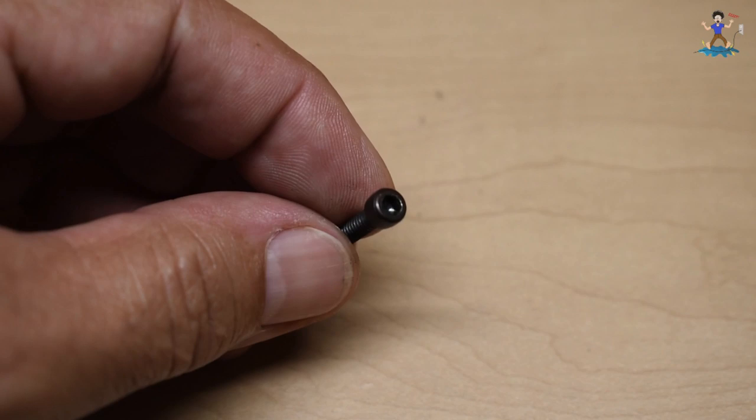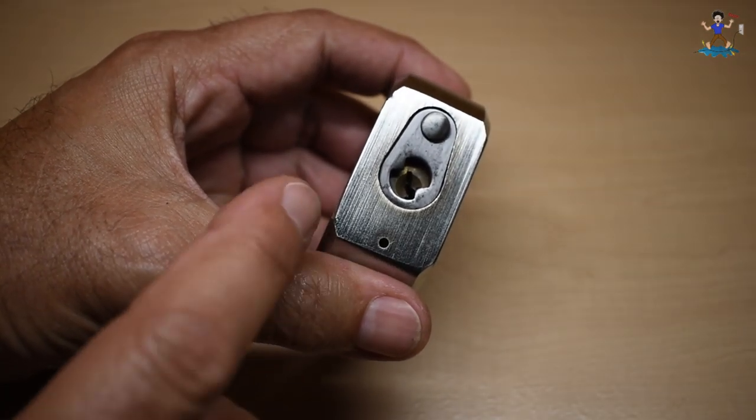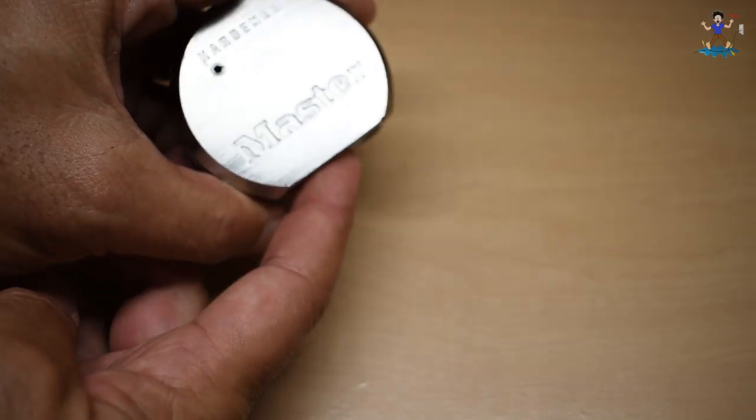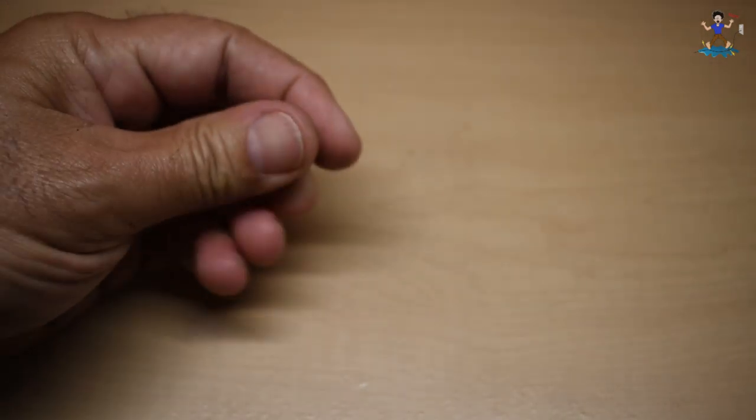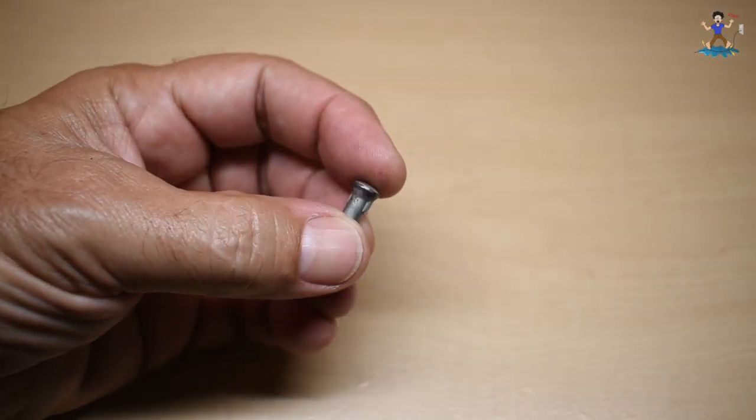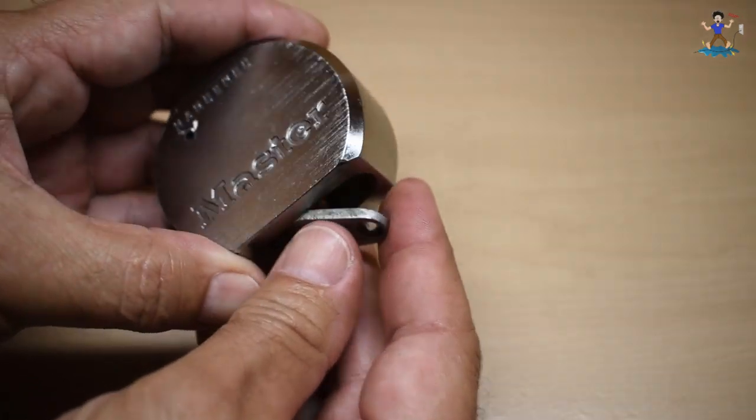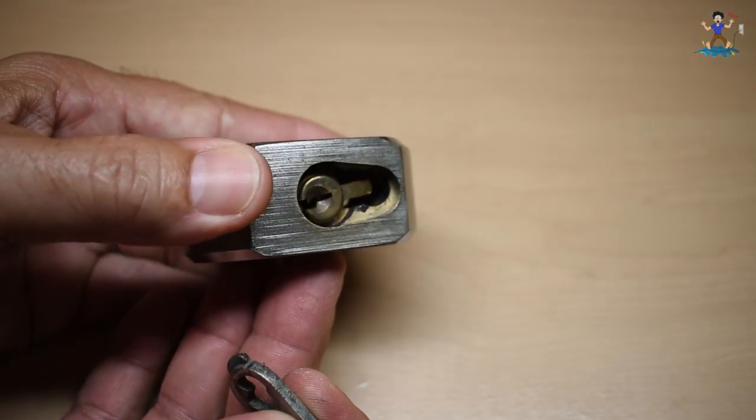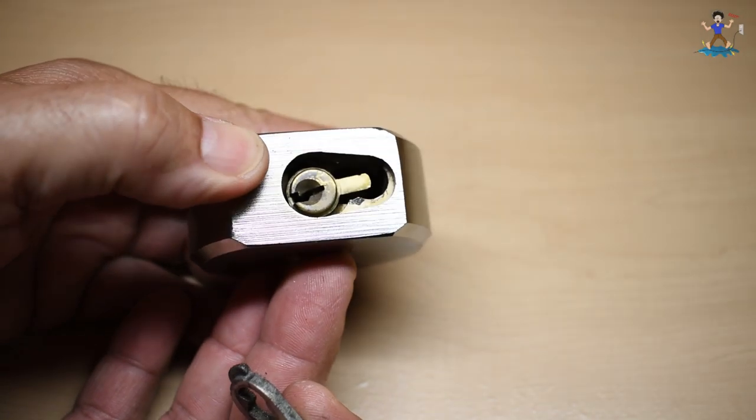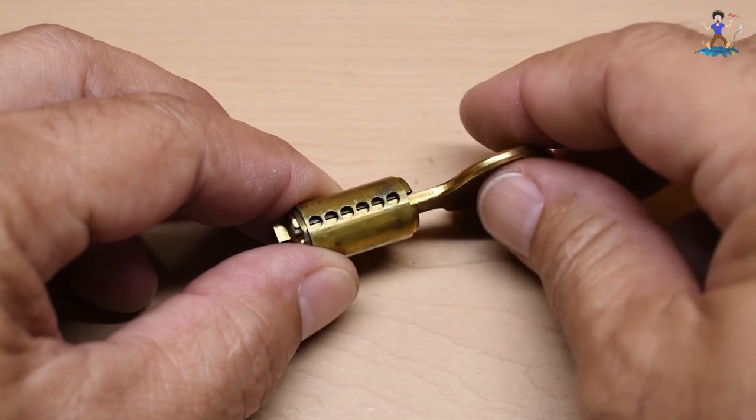Right here is the screw that was removed and right here this is the piece that came off. Now you can see the six chambers.